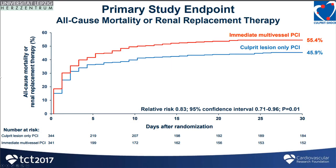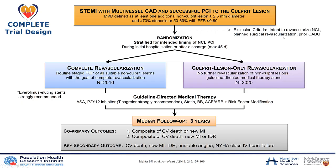The reason is the CULPRIT-SHOCK trial, which demonstrated that doing culprit lesion-only PCI in cardiogenic shock patients with myocardial infarction was associated with better outcomes — less mortality or renal replacement therapy — compared to patients who had immediate multivessel PCI.